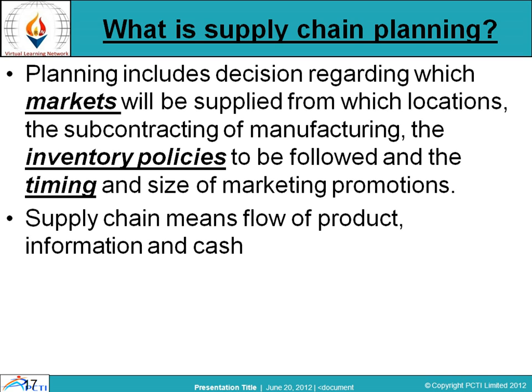Supply chain planning includes decisions regarding which market will be supplied from which location, the inventory policies to be followed, and the timing and size of marketing promotions — all decided in supply chain planning. Supply chain means flow of the product, flow of the information, and flow of the cash. Planning about all of these is what supply chain planning is all about.